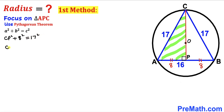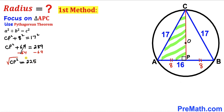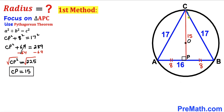Simplifying: CP² + 64 = 289. Subtracting 64 from both sides gives CP² = 225. Taking the square root of both sides, CP = 15 units.